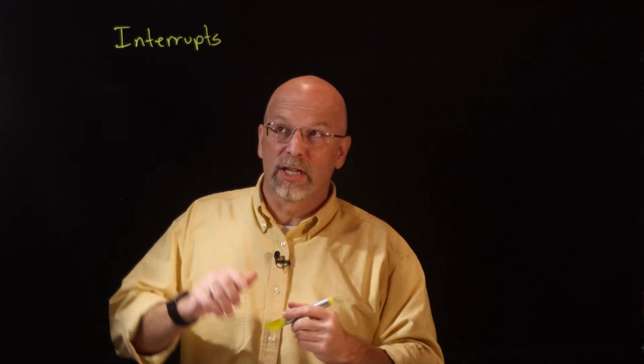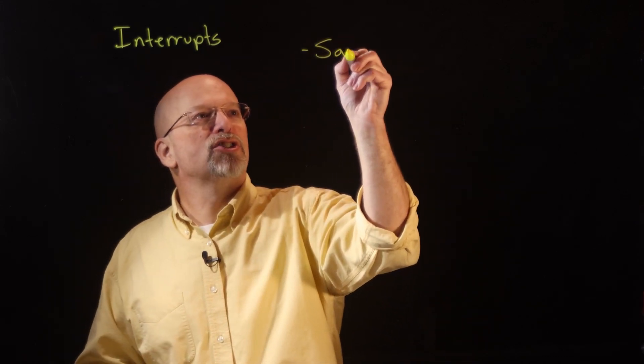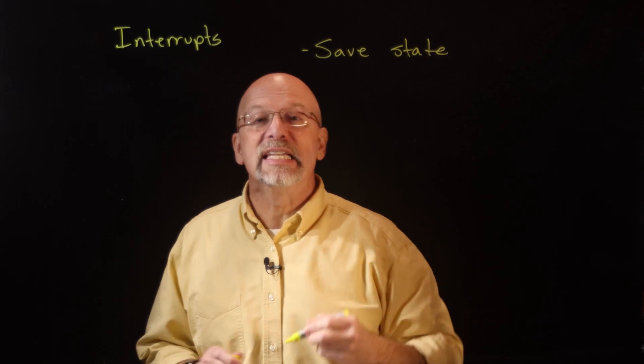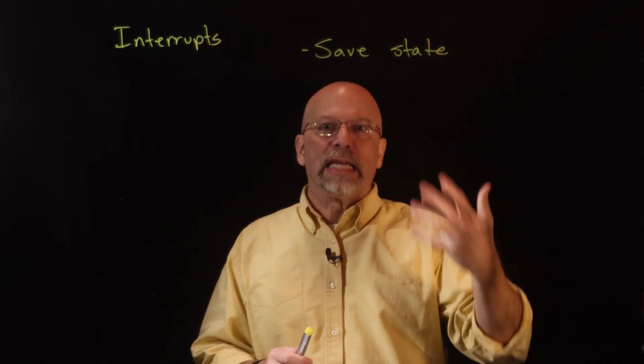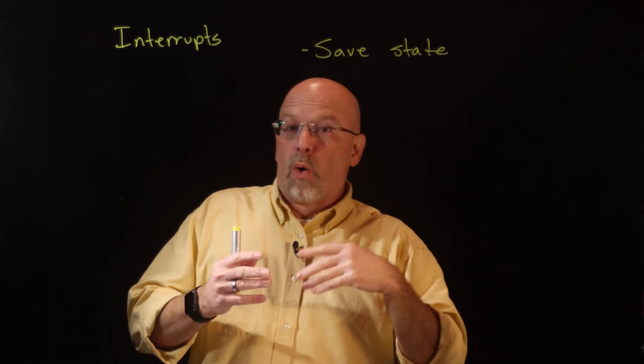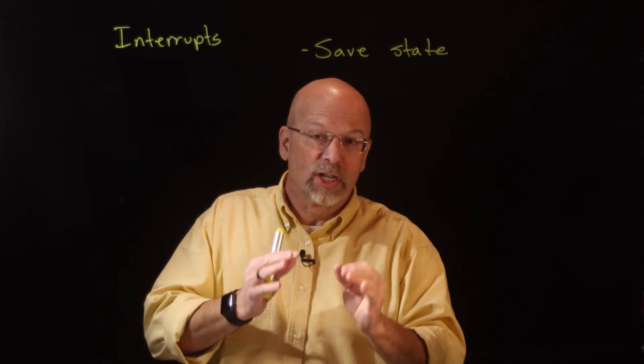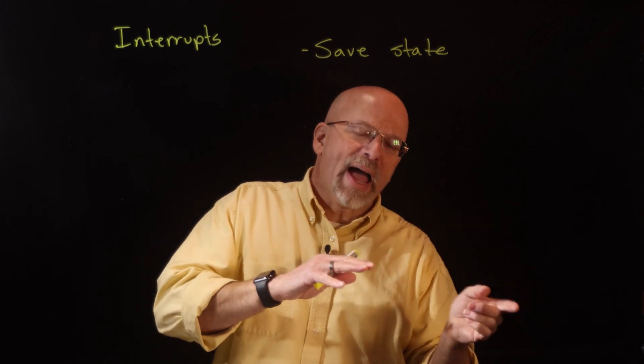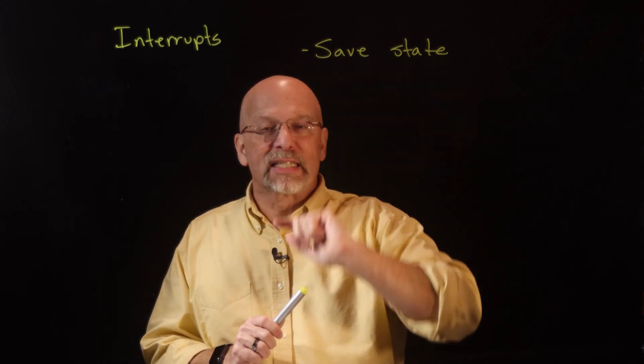Polled IO is kind of required whenever you have very simple hardware you're interfacing with, but most systems connected to the input and output of a processor support this thing called an interrupt. The key behind the analogy — the phone call and the dog being let out — is a couple of things. First of all, we have to save the state or condition that we were in: I was at a certain timestamp in the video, or at a certain point in our conversation, and I had to remember that so that when I came back, I could pick up where I left off.